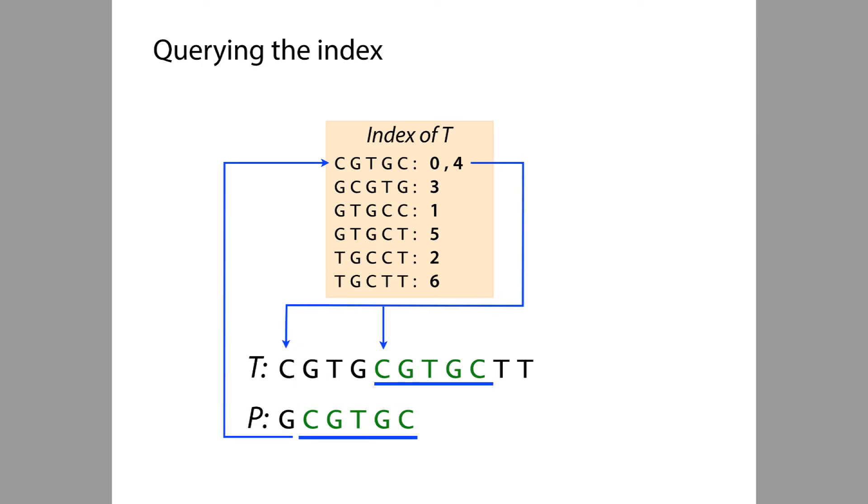In our verification, we have to check whether this G at the beginning of P matches this G. And it does. This illustrates that it doesn't really matter which 5-mer from the pattern is used. Any of them will lead to the correct set of matches of P within T. Here again, we found the same match, the match at offset 3.